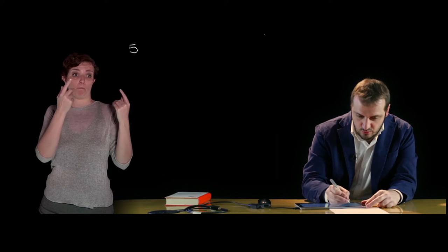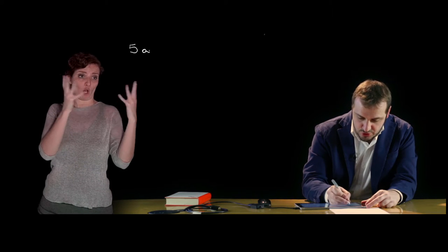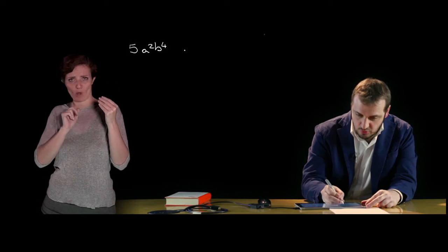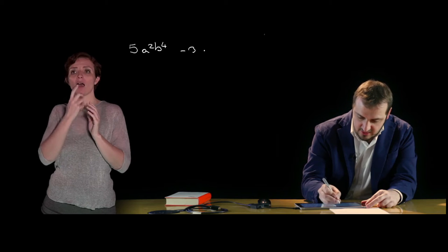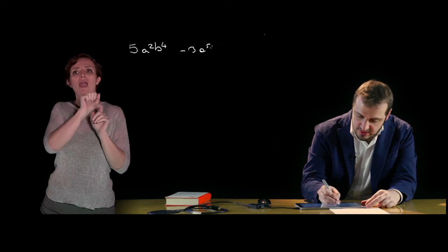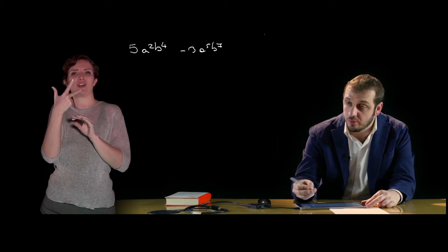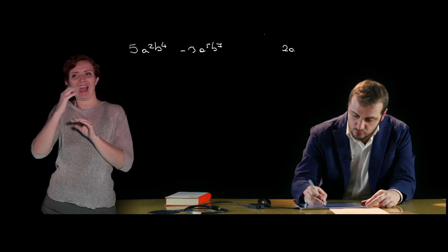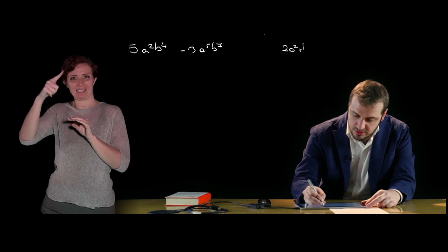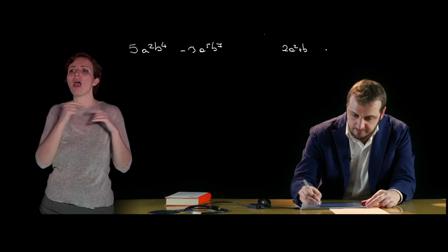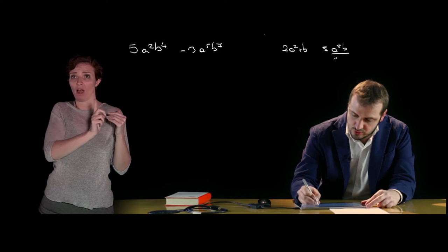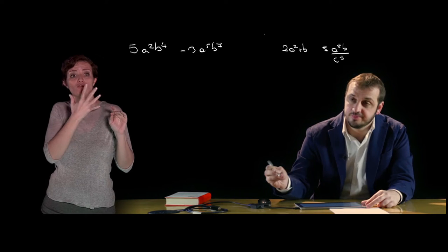Per vedere che cos'è un monomio e cosa non è un monomio: 5a alla seconda b alla quarta oppure meno 3a alla quinta b alla settima sono evidentemente dei monomi. Non sono invece monomi 2 alla seconda più b oppure 5a alla seconda b fratto c alla terza.